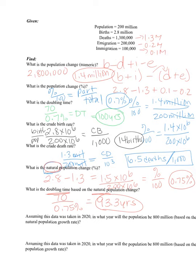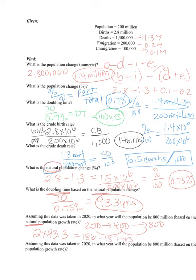Assuming the data was taken in the year 2020, in what year will the population be 800 million based on the natural rate? Starting at 200 million: 200 doubles to 400, then doubles to 800 — that's two doubles. So 2 times 93.3 = 186.6 years, roughly 186 to 187 years. Adding to 2020 gives the year 2206 or 2207.